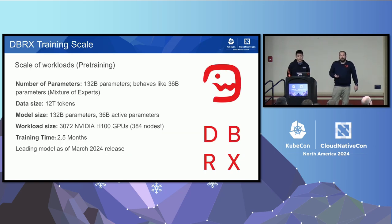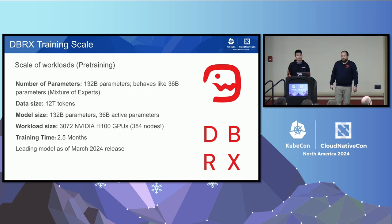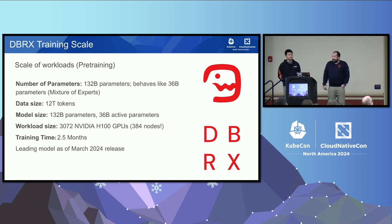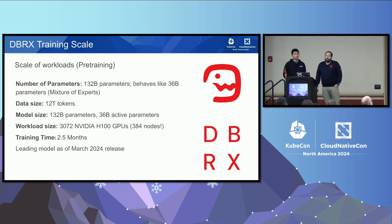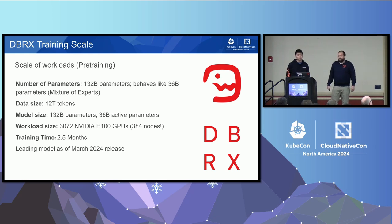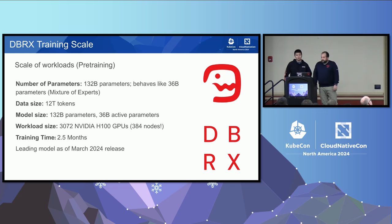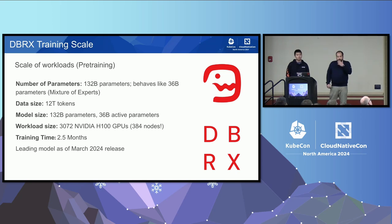We'll talk about the scale of DBRX, which got coined internally as a dinosaur-branded project. DBRX was an open LLM built entirely at Databricks, fully pre-trained with 132 billion parameters. It behaves like 36 billion parameters due to its MoE — Mixture of Experts — architecture. The workload size was 3,072 NVIDIA H100 GPUs trained over the course of two and a half months.